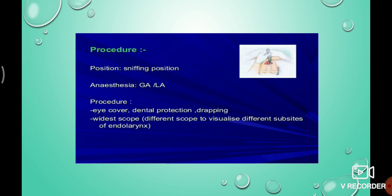As a nurse, we have to cover the patient's eyes — a piece of gauze is used for that. Then dental protection is provided in order to protect the upper teeth against trauma from the laryngoscope or rigid device. We should take care of dental protection, and also drape the patient to provide privacy.